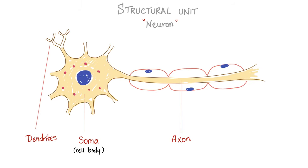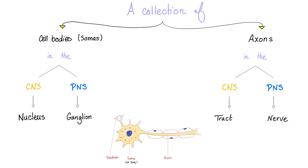As you know, the neuron is the structural unit of the nervous system. The neuron has a soma and an axon. A collection of somas in the central nervous system is a nucleus. A collection of somas in the peripheral nervous system is a ganglion.